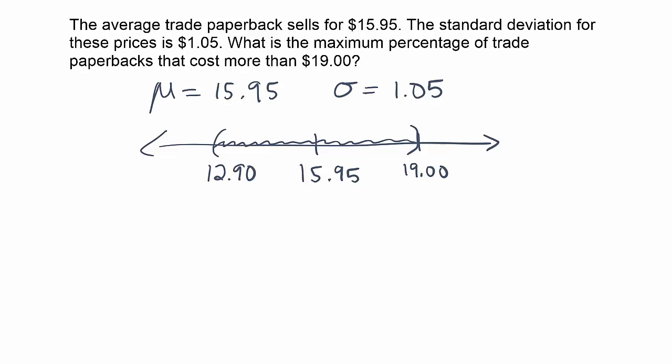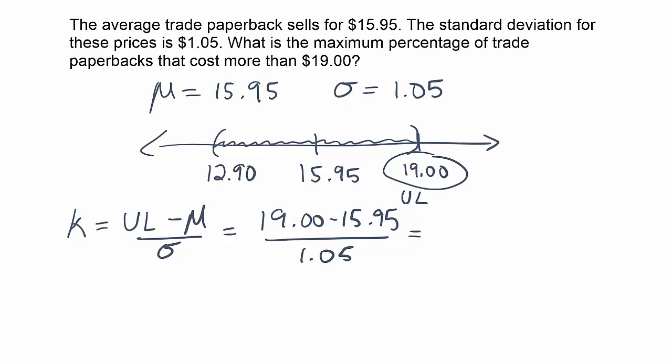So the way I teach my students to do this is to take the upper limit of the interval. I'm going to call this UL for upper limit, and we plug it into the following formula to get K. K is equal to the upper limit minus the mean over the standard deviation. The upper limit here is $19 minus the mean, which is $15.95, divided by the standard deviation, which is $1.05. Let's work that out and see what we get.